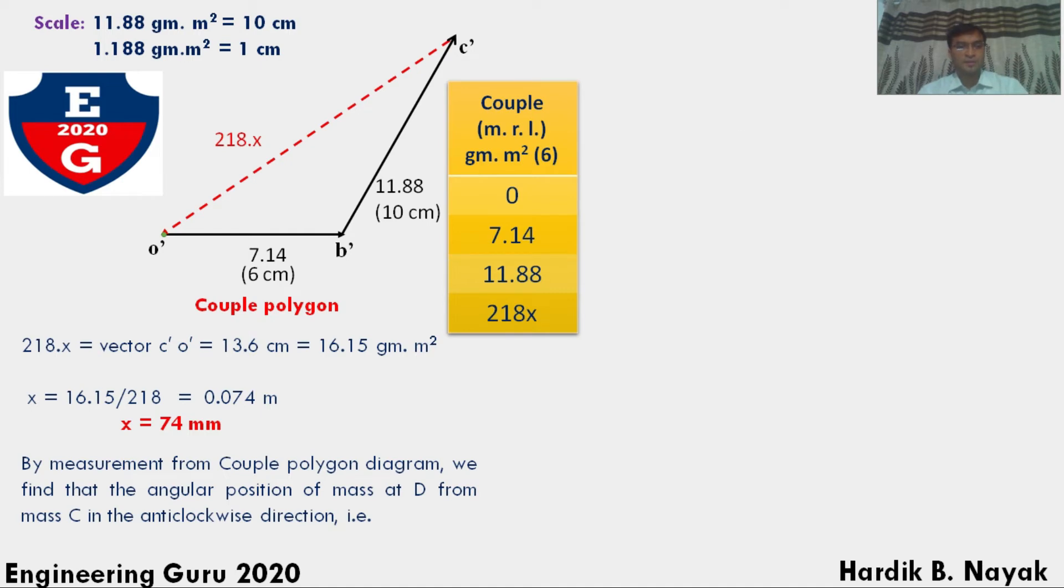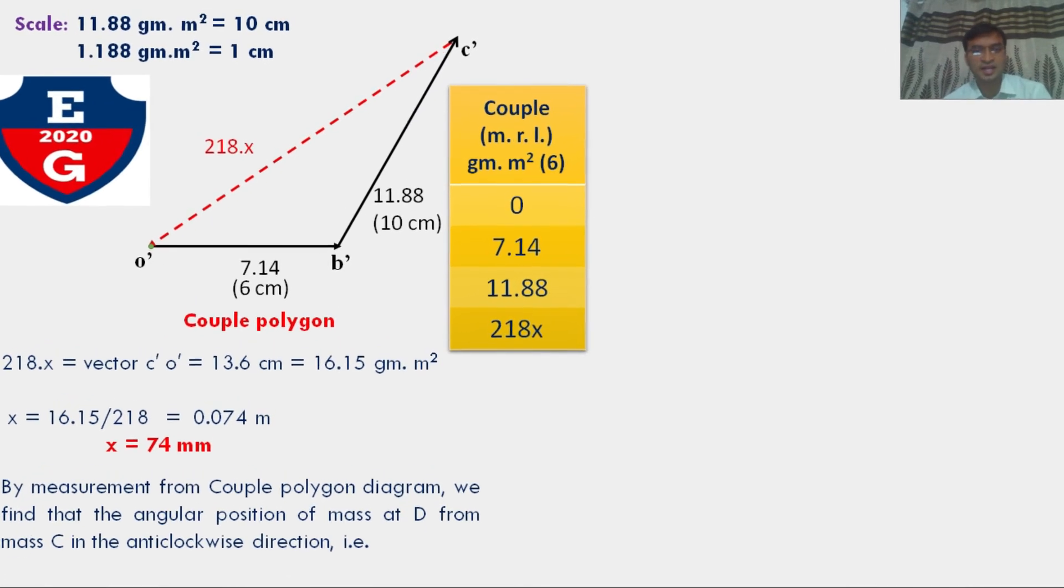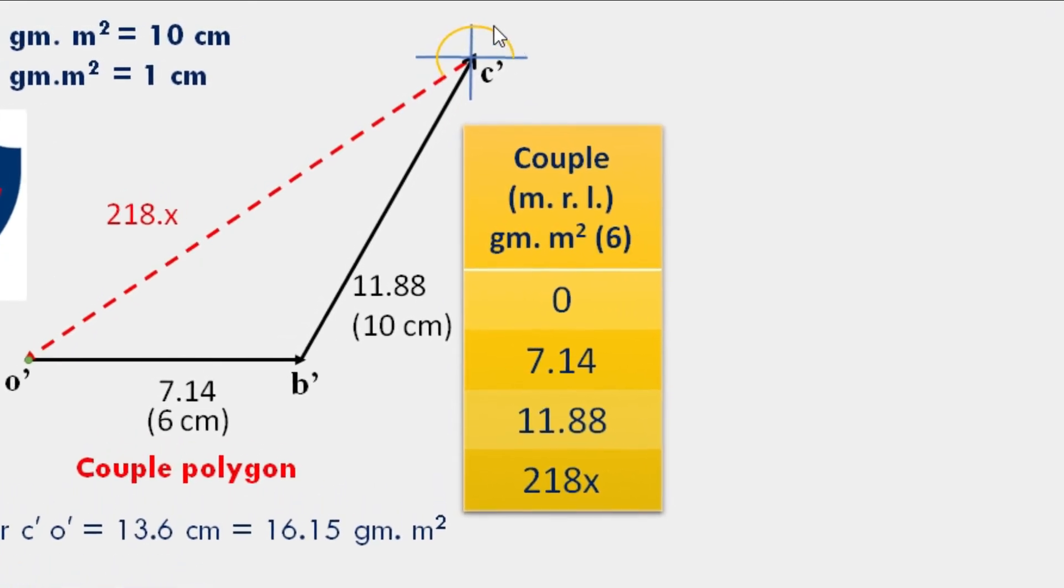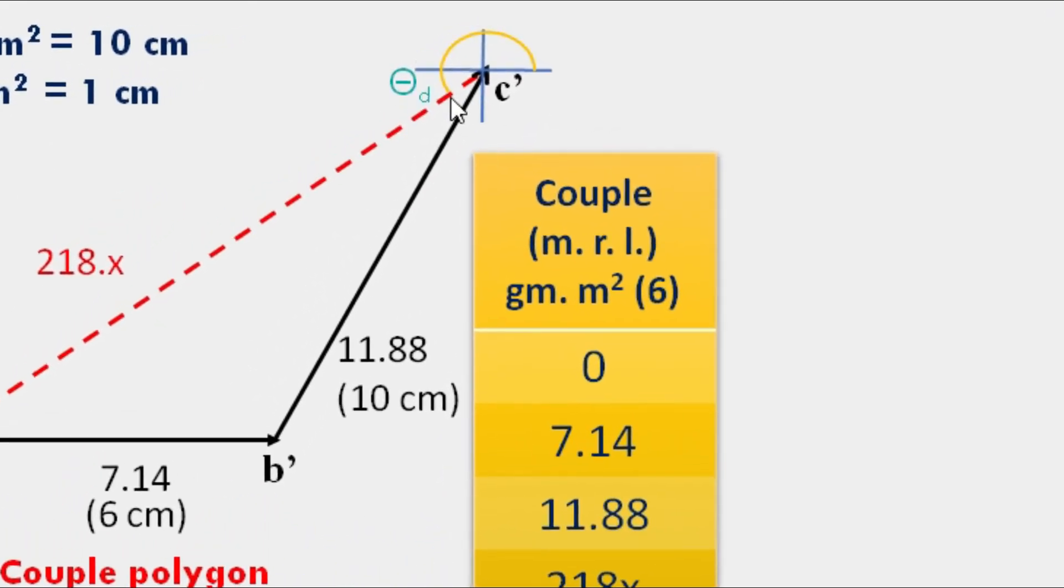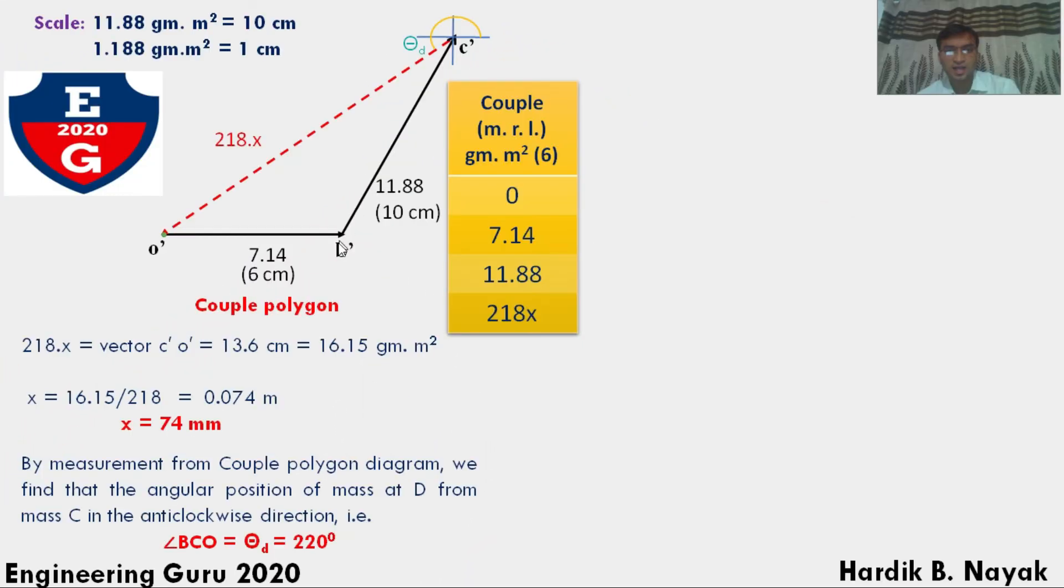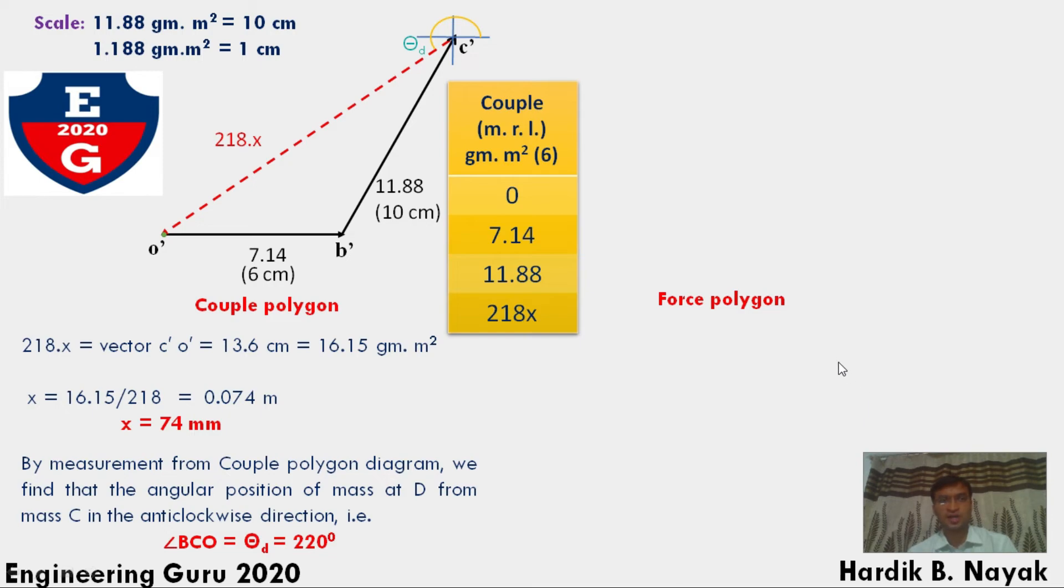By using protractor, measure from couple polygon diagram. We find that the angular position of mass at D from mass C in anti-clockwise direction. That angle theta D equals angle BCO equals 220 degrees.